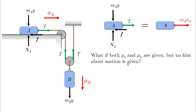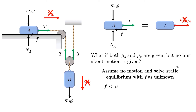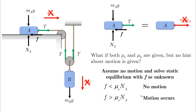If both mu_s and mu_k are given and no hint about motion is provided, this is our third possibility: assume no motion and solve static equilibrium with friction f as an unknown — meaning no acceleration and all force summations equal zero. Once we solve for f, we check the assumption. If f is less than mu_s times N, no motion is occurring. If f exceeds mu_s times NA, our assumption is violated, motion must occur, and we redo the problem with f equals mu_k times NA and summation of forces equal to ma.